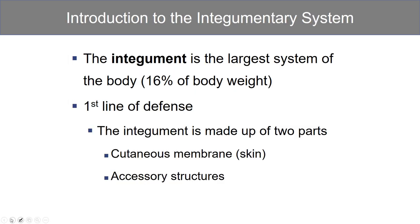The integument is the largest organ system in the body, comprising about 16% of body weight. It is our first line of defense. The integument is made up of two distinct parts: the skin, known as the cutaneous membrane, and the accessory structures that support the skin.